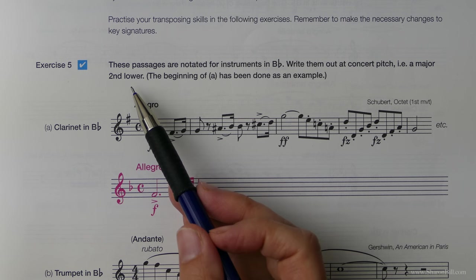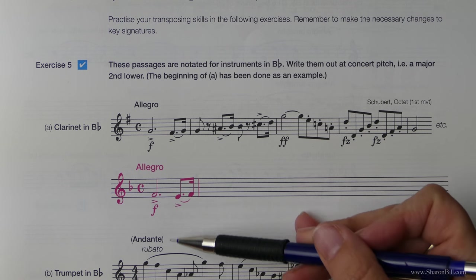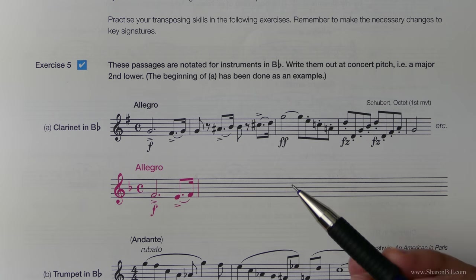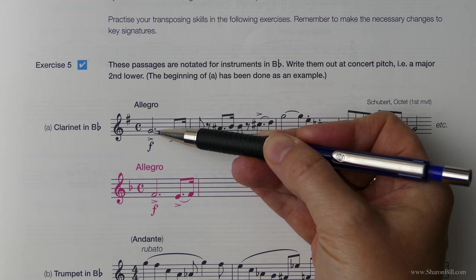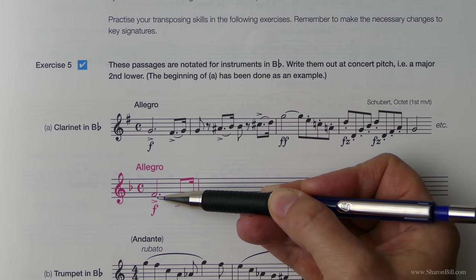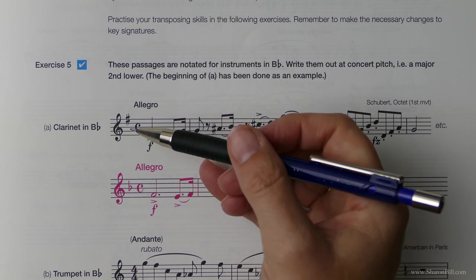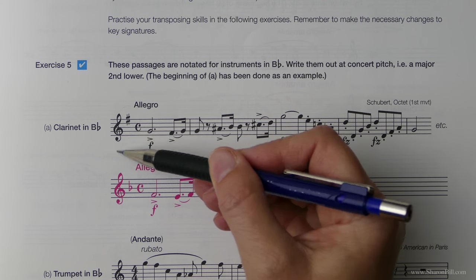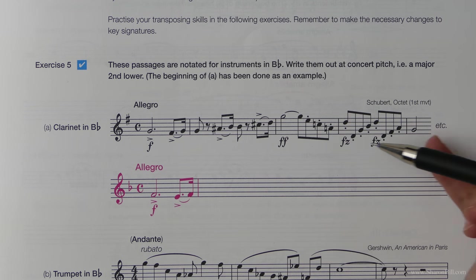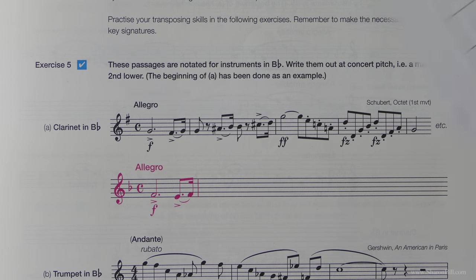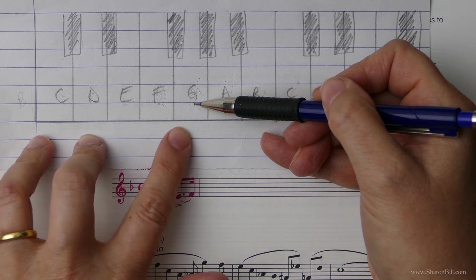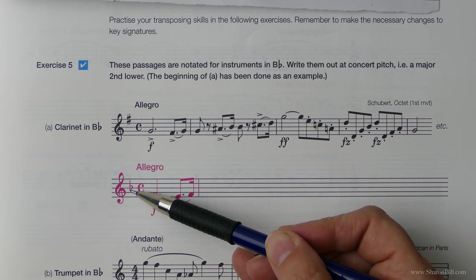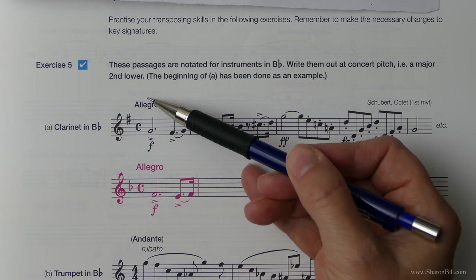And so we're asked to transpose these exercises in exercise five a major second lower. We're writing them out at concert pitch, that is we are writing out how the instrument would actually sound. So for example here we have the clarinet in B flat playing note B, but it will actually sound note F. And so what's happened here is we've looked at the key signature and we'll think this is G major. Whether it's G major or E minor is irrelevant, it still works out the same principle. It's just easier to think of it in the major. And so if we think we're in G major and we need to be a major second lower, we're now going to be playing in F major, therefore we need to write the key signature for F major and everything is a major second or a full step on the stave lower.